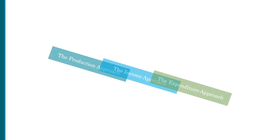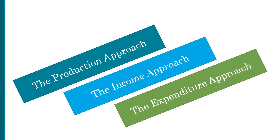There are three approaches to calculating gross domestic product, or GDP. They are the production approach, the income approach, and the expenditure approach. All three approaches should lead to the same result, though in practice there's often a little bit of error in the estimation. But each one also helps illuminate what GDP is trying to measure and what it doesn't measure.